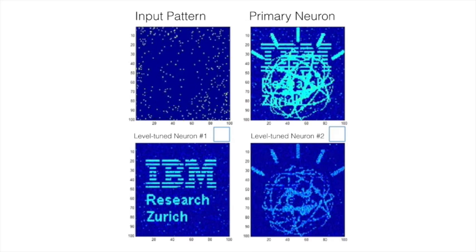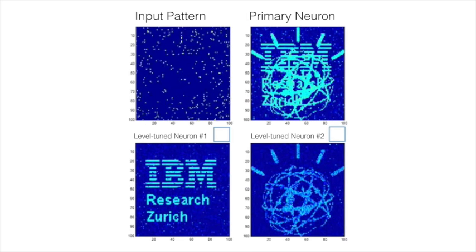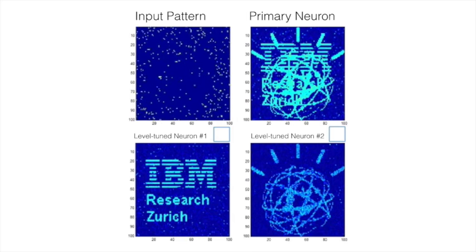We have mimicked the functionality of neurons and synapses to distinguish the Watson and IBM research patterns and detect their arrival times on their own.